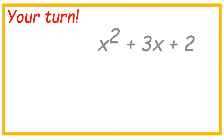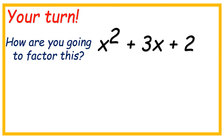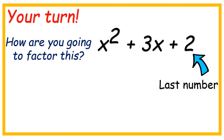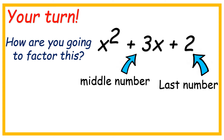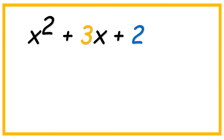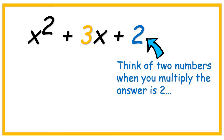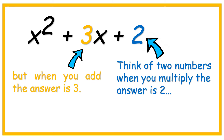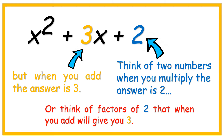Your turn! x squared plus 3x plus 2. How are you going to factor this? Yes, focus on the last number and the middle number. x squared plus 3x plus 2 — the last number is 2. We're going to think of two numbers: when we multiply, the answer is 2, but when we add it, the answer is 3. Or think of factors of 2 that when you add will give you 3.